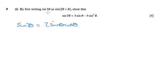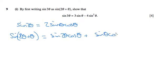So if we then do the sine 3 theta as 2 theta plus another theta, that's going to be sine 2 theta cos theta plus sine theta cos 2 theta.